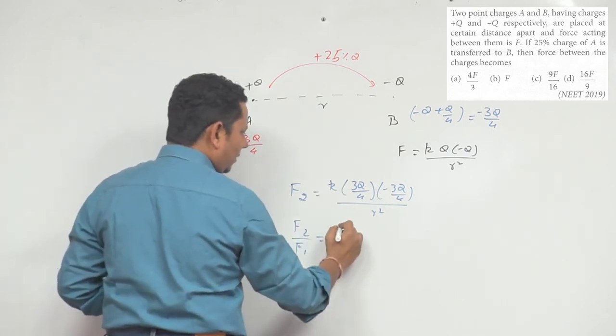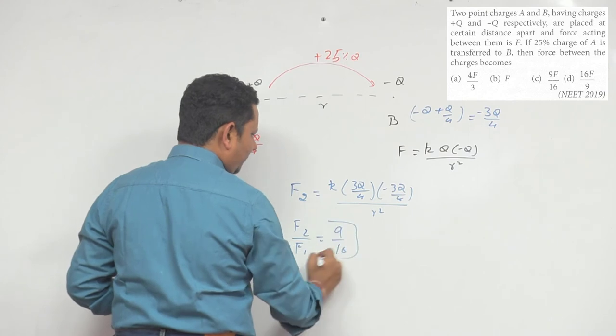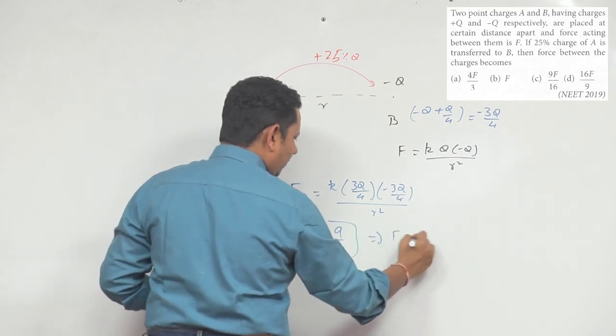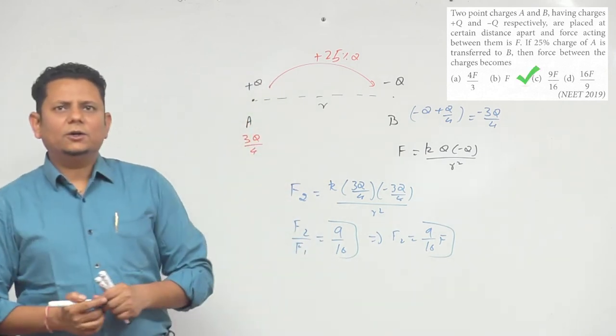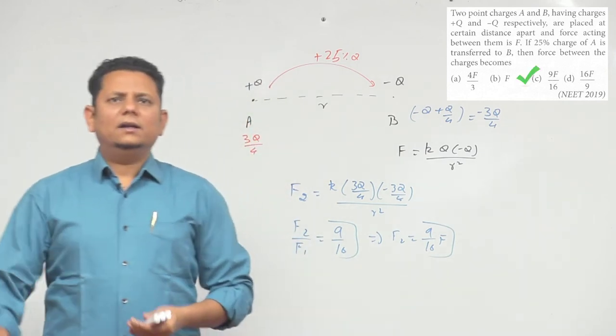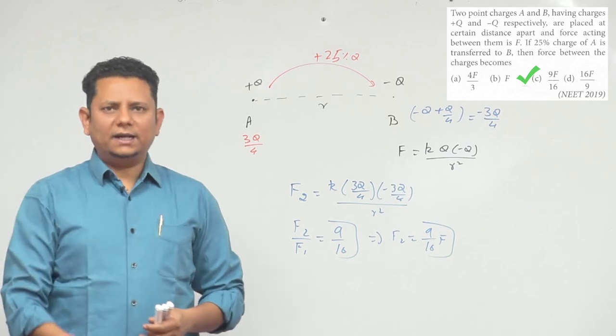Which implies F₂ will be equal to (9/16)F. So based on this, we can say that option C, 9F/16, would be the right answer.